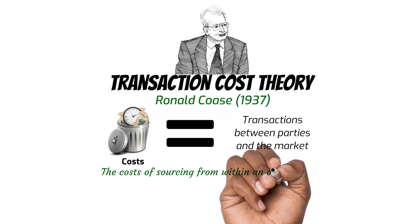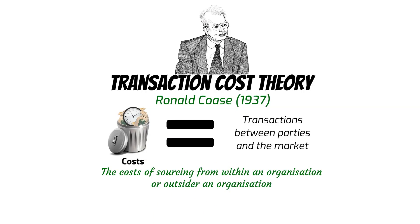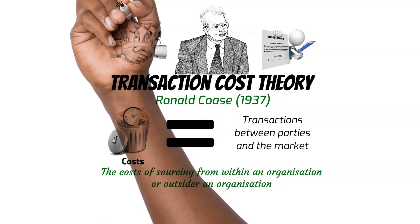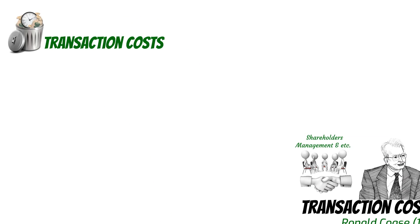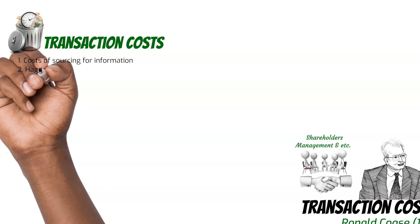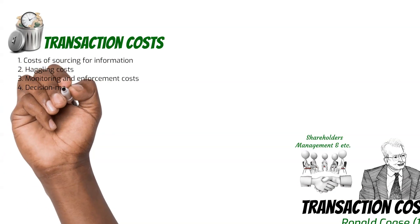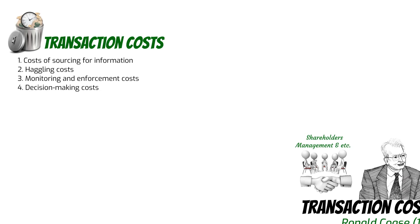If a firm decides to source from within or outside the organization, these lead to transactions, and all such transactions attract costs. Transaction cost economics explores the costs involved in conducting transactions between various parties within and outside an organization. These transaction costs can include agreements, contracts, and interactions between shareholders, management, suppliers, and customers. Studies have summarized these into four main costs: the cost of searching for information, haggling costs, monitoring and enforcement costs, and decision-making costs. These transaction costs can be significant in coordinating activities and aligning interests among various organizational stakeholders.